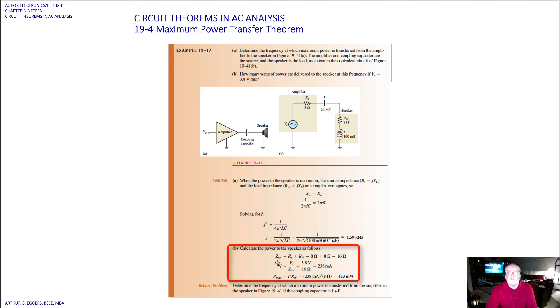Calculate the power to the speakers then. Z total equals R sub S plus RW. The source and the winding resistances give us 16 ohms. The current then, V sub S over Z total, for that 16 ohms is 3.8 volts divided by 16 ohms, gives us 238 milliamps. So the power maximum I squared R equals 238 milliamps squared times 8 ohms, which is 453 milliwatts.